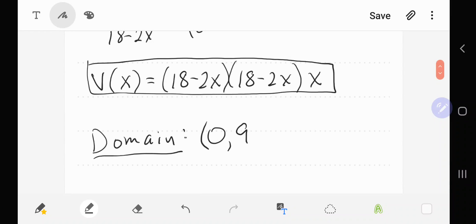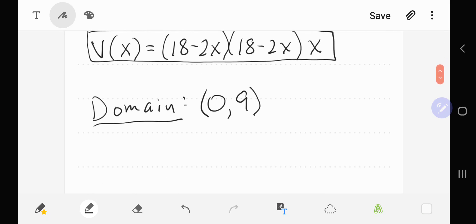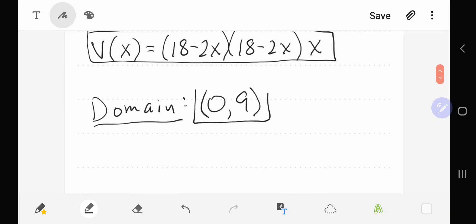Half of 18 is 9. But we're going to put a parenthesis because if I cut equal to 9 and 9 from the other side, I've actually cut all of the cardboard away and there won't be any box. So that's the domain of this function.